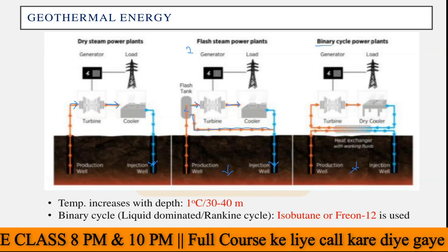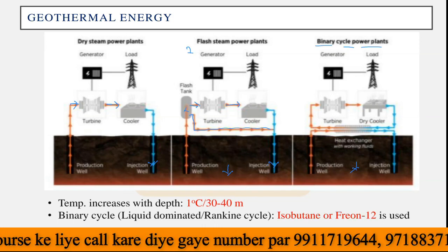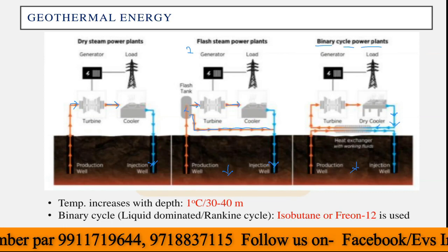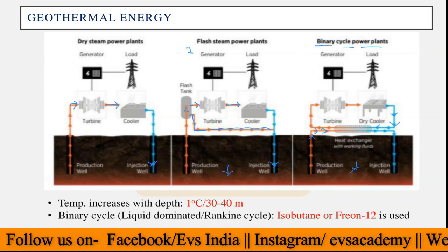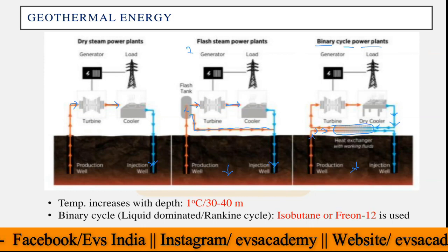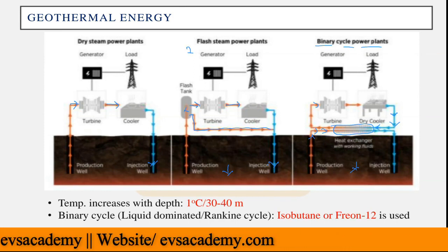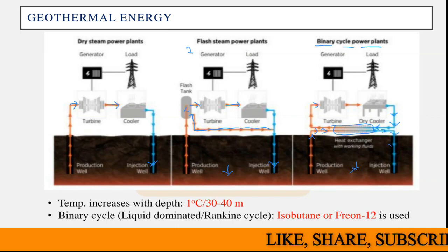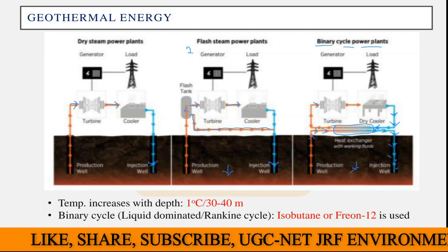Then we have the binary cycle power plants, where the closed circuit is used. Here you introduce a particular type of material or liquid. It will take the temperature from the water coming from the production well at the heat exchange point. Now this cooler liquid becomes hot and goes to the turbine to run it. It is then cooled down again, and the cooler liquid comes back to take temperature. Because the temperature is extracted here, the cooler liquid goes back to the injection well. That is how the binary cycle or closed cycle works.